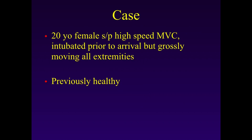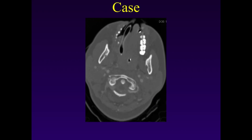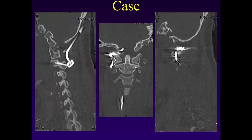The next talk will be on this case: a 20-year-old female involved in a high-speed motor vehicle accident. She was intubated prior to arrival and was grossly moving all extremities, with no significant past medical history. A CT scan of her cervical spine showed dissociation between the occipital condyles and the lateral masses of C1, diagnostic of an atlanto-occipital dislocation. Axial images with a CTA suggested dye extravasation at the vertebral artery in the V3 distribution on the right, however this was not appreciated preoperatively. During dissection we encountered a significant amount of blood that had to be tamponaded.